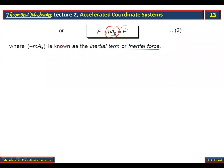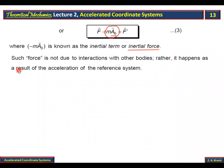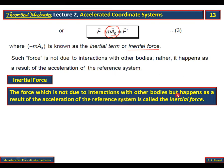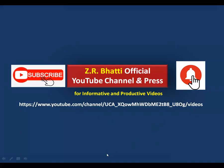Such a force is called an inertial force. This force is not due to interactions with other bodies. Rather, it happens as a result of the acceleration of the reference system — the reference system which moved and translated. The force which is not due to the body's interactions with other bodies, but arises from the acceleration of the moving coordinate system, is called the inertial force.